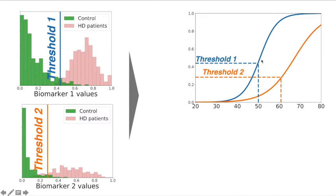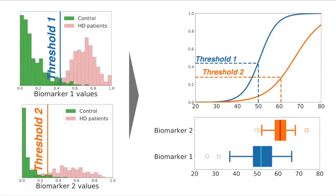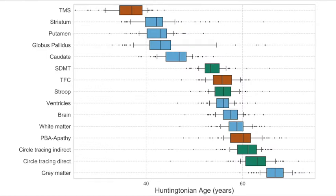If we represent this pathological threshold on the progression of our biomarkers, for each biomarker we're able to know at which age the average progression crosses this pathological threshold. By repeating the estimation for each biomarker a given number of times, we can represent for each biomarker at which age it becomes abnormal. For instance, the total motor score becomes abnormal at around 35 to 38 years old, followed by imaging features such as the striatum, putamen, globus pallidus, and caudate. The last variable to become abnormal is gray matter at around 65 to 70 years old.